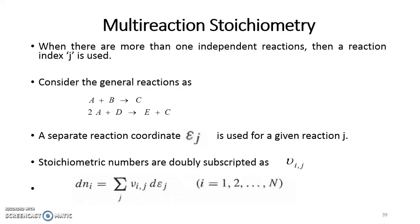We are talking about multi-reaction equilibria. If there is a reaction going on — A plus B gives you C — and A reacts also with D to form E and C, we can say that there are two species, A and C, which are taking part in both reactions. What we need to do is extend our mathematics, which was therefore for a single reaction, to multi-reaction.